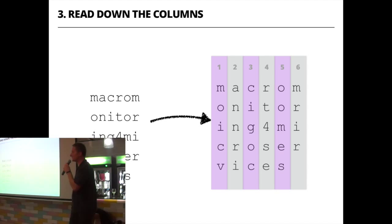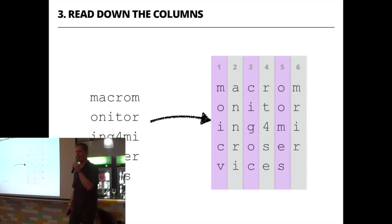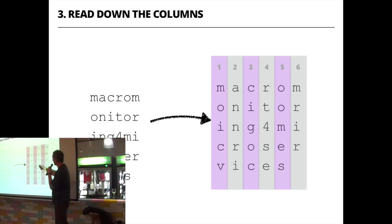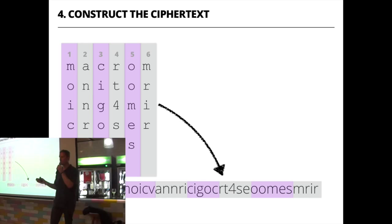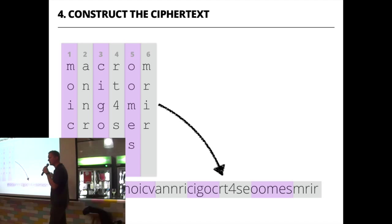Then instead of reading left to right, top to bottom as you traditionally would, you read top to bottom, left to right — you read down the columns and construct the encoded text from those columns, which gives you the ciphertext. So there are about four primary steps to go from plain text to ciphertext, plus a little IO: getting the plain text in and displaying the ciphertext at the end. Four main steps of the algorithm. Keep that in mind.